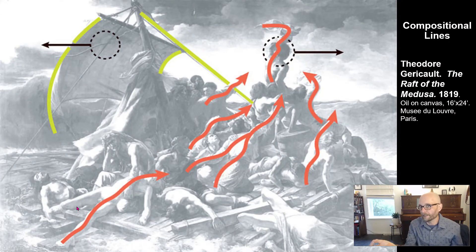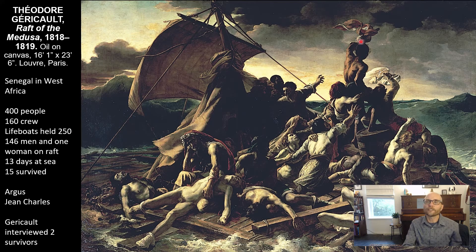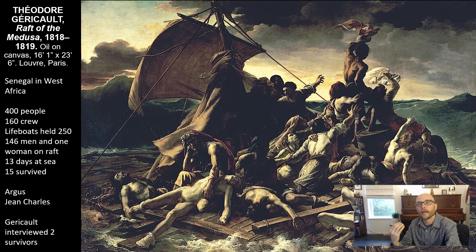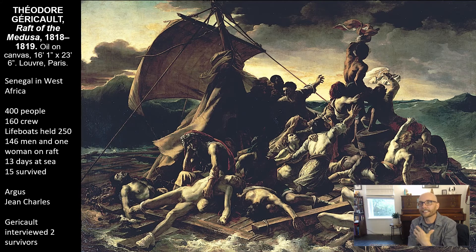Looking at the use of line in The Raft of the Medusa: the artist has created several different kinds of lines — in the sail, the rope, the mast — but if you look at the figures themselves, they form a line that almost mirrors a wave, causing a sense of drama and drawing our eye upwards toward Jean Charles at the top. The artist is using line to tell the drama of the story. Imagine if it had been painted like the Brothers Racing, all flat horizontal lines — it would be boring. This is a perfect example of an artist using line to help tell the story.